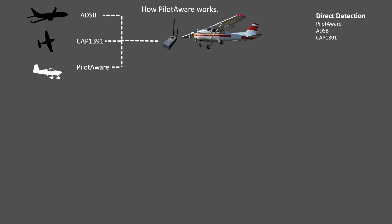Firstly, PilotAware devices directly detect aircraft transmitting PilotAware signals, ADS-B from transponders and low-powered ADS-B from CAP 1391 devices. In addition they will also pick up mode C and mode S aircraft, but at this stage these are only detected as a bearingless target.